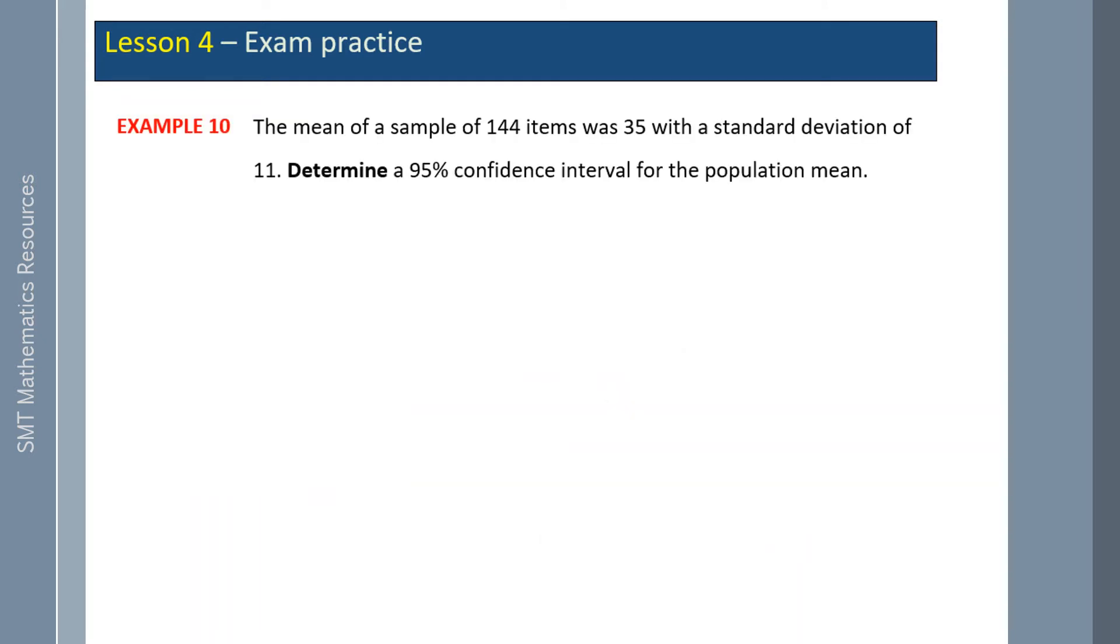Example 10: The mean of a sample of 144 items was 35 with a standard deviation of 11. Determine a 95 percent confidence interval for the population mean. Here we've got s because we don't know the population standard deviation. Our s was 11 and our sample was 144. So our standard deviation for a sample is 0.9167.